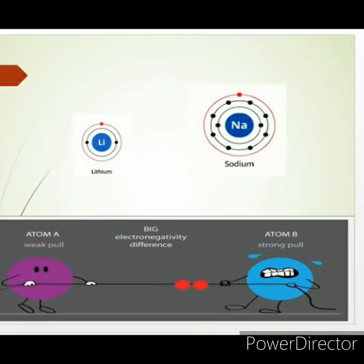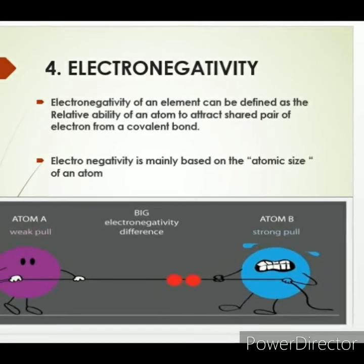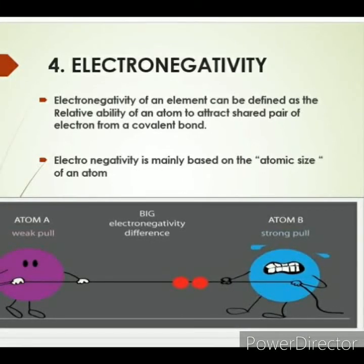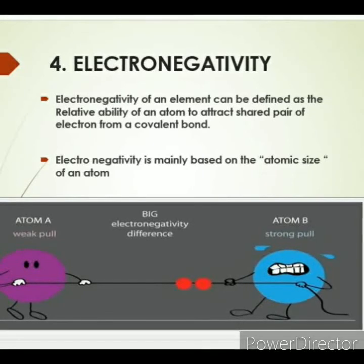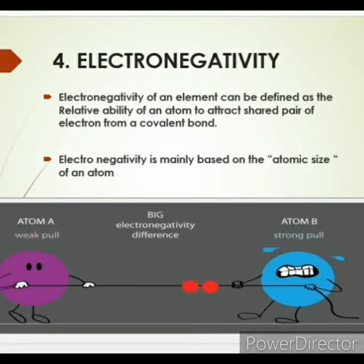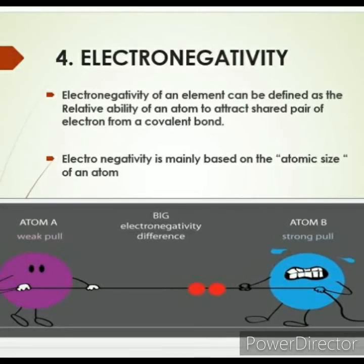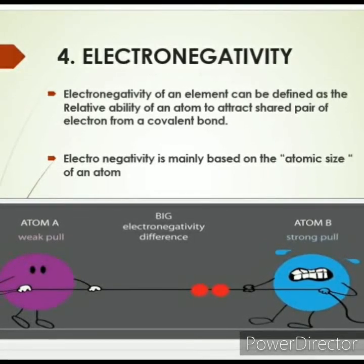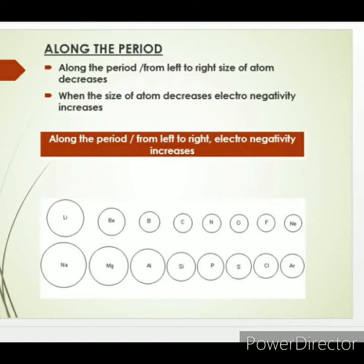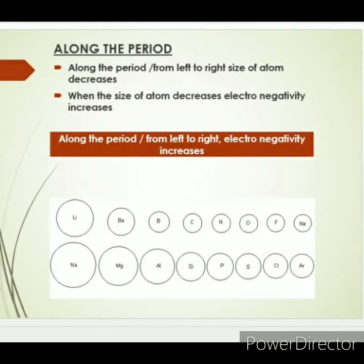Just look at the picture given below. Atom A and Atom B are shown. The electron of atom A is attracted by the nucleus of atom B. This is the definition of electronegativity. Electronegativity of an element can be defined as the relative ability of an atom to attract the shared pair of electrons — think of that incoming electron from a covalent bond during bond formation. So electronegativity is mainly based on the atomic size of an atom.